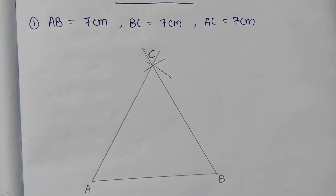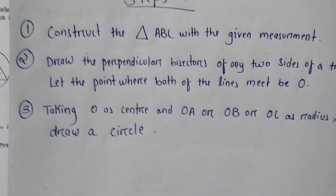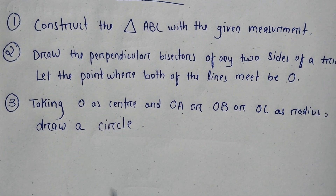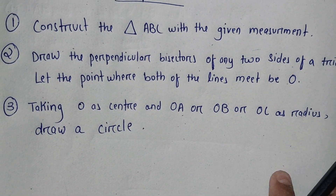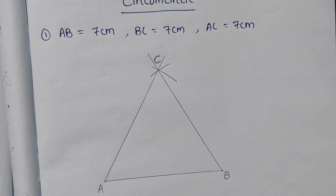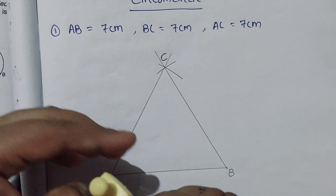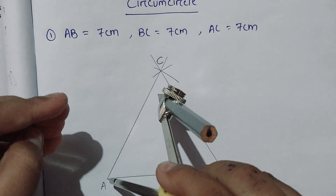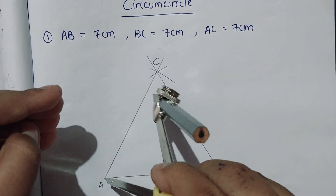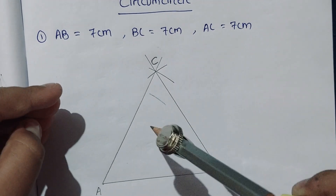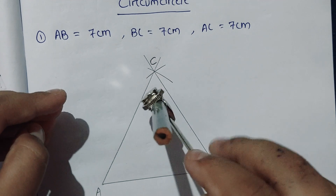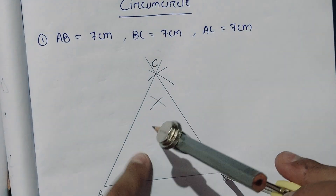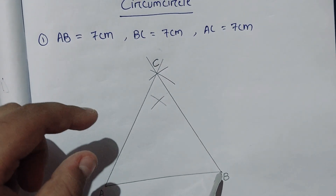We have constructed the triangle with the given measurement. The second step is to draw the perpendicular bisectors of any two sides. The point where both bisectors meet is known as point O. To draw the first bisector of AB, we take a length more than half the line and cut an arc above, then place the compass on B and cut another arc.